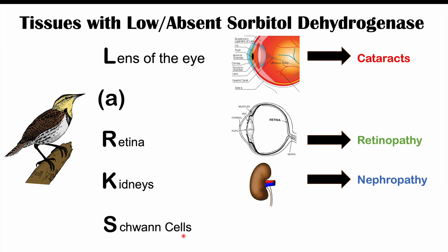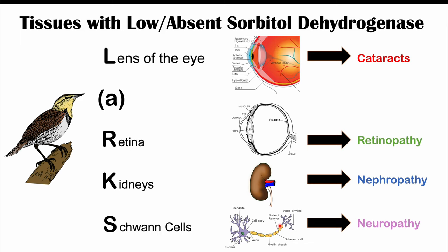The S stands for Schwann cells, which compose the myelin sheath of axons in the peripheral nervous system — distinct from oligodendrocytes, which form myelin in the central nervous system. The myelin sheath is the fatty coating over axons that improves the speed of neural transmission. Damage from sorbitol buildup in Schwann cells leads to neuropathy, most commonly termed diabetic neuropathy.